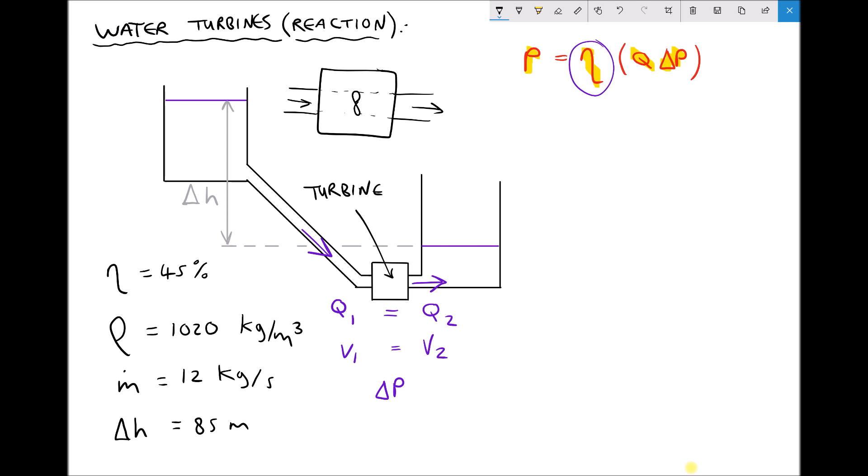So that said, we can calculate the power output of this turbine based on various parameters. In the bottom left hand corner I've specified an efficiency of this turbine as 45%. We already know that it can't exceed 59.3% because of Betz' limit. I've also specified a fluid density of 1020 for salt water. We have a mass flow rate through the turbine of 12 kg per second, and we have a change in height between the upper tank and the lower tank of 85 m.